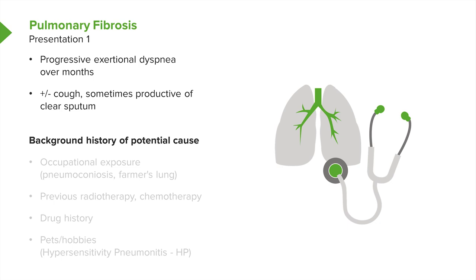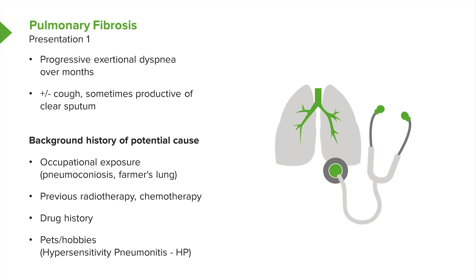When taking the patient's background and social history, you may identify a potential cause for pulmonary fibrosis, such as a history of rheumatoid arthritis, farming occupation suggesting farmer's lung — a form of hypersensitivity pneumonitis — or prior asbestos exposure causing asbestosis. They could also have had radiotherapy or chemotherapy, identifiable from drug and past medical history. You may also ask about pets such as birds or specific hobbies, as hypersensitivity pneumonitis tends to be linked to exposure to pets, hobbies, or specific occupations.